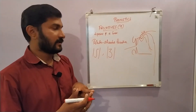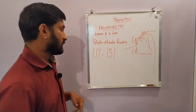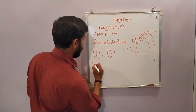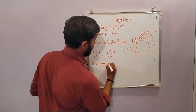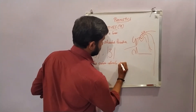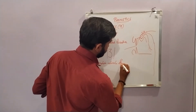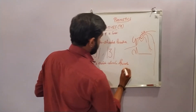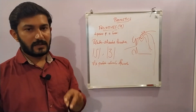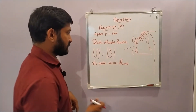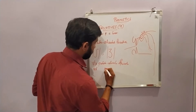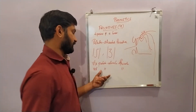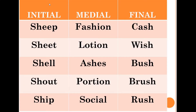The vocal cords are lying far apart for SH, making it a voiceless palato-alveolar fricative sound. Coming to ZH, the vocal cords lie close together, producing phonation, making it a voiced palato-alveolar fricative.